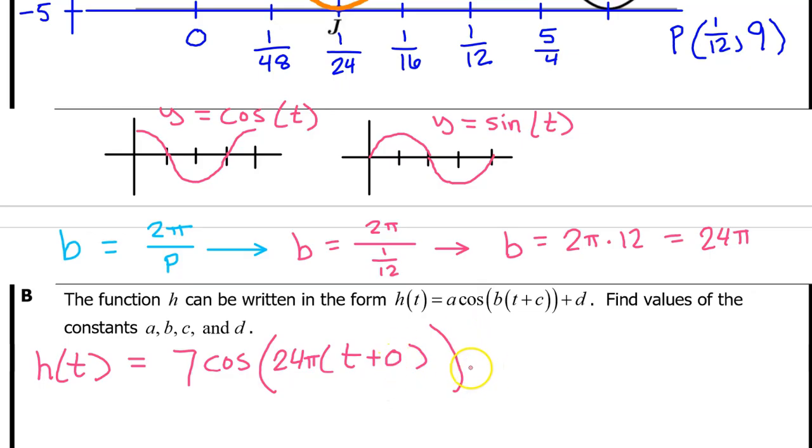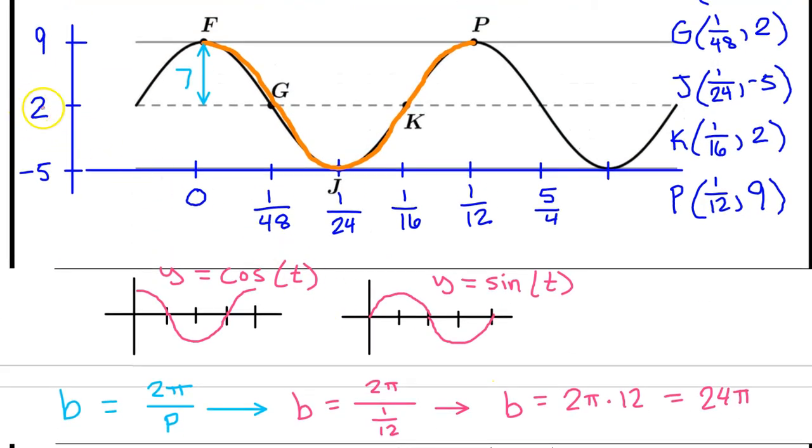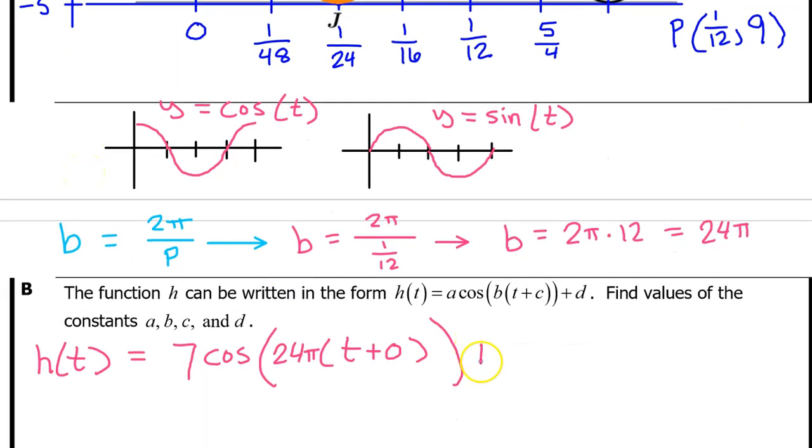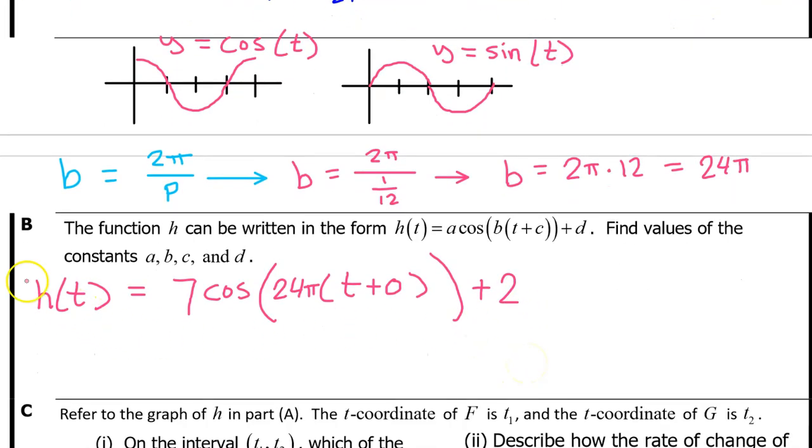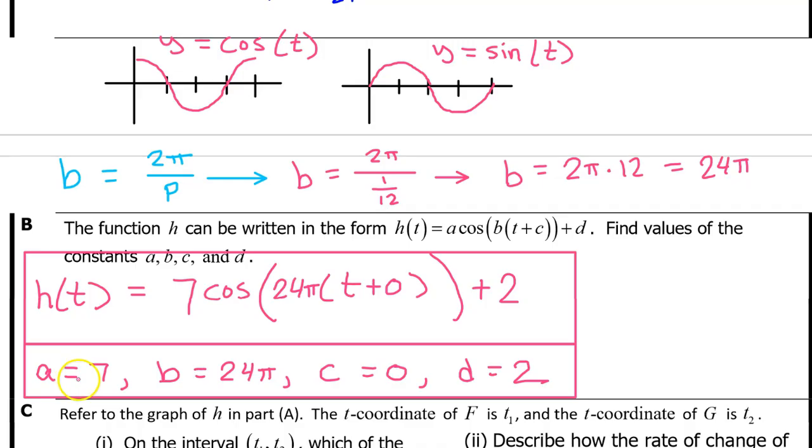That just leaves the d value. The d value always corresponds to the middle output value, which in this case is 2. So d is 2, which goes right here. On the AP exam, you're allowed to just leave your answer like this. Or you can give the individual values of a, b, c, and d like this.